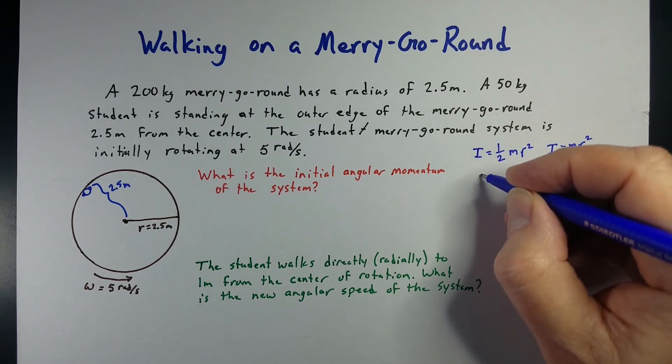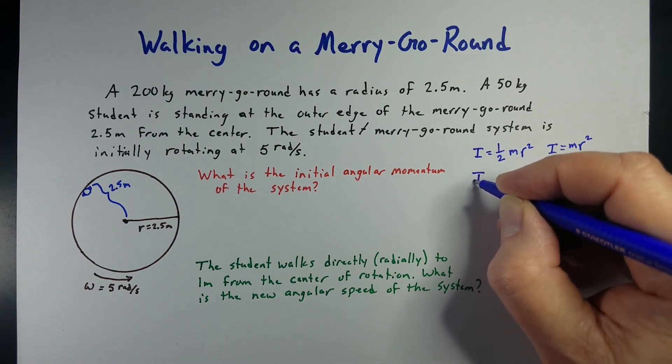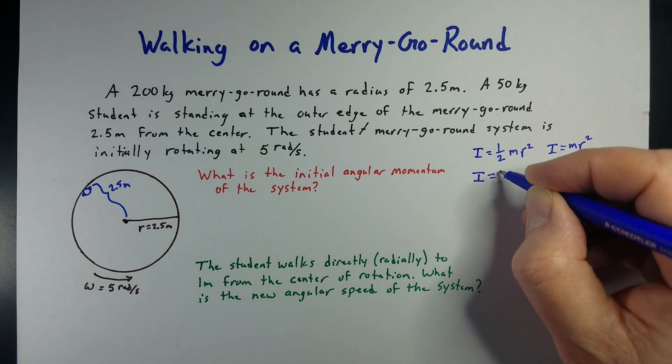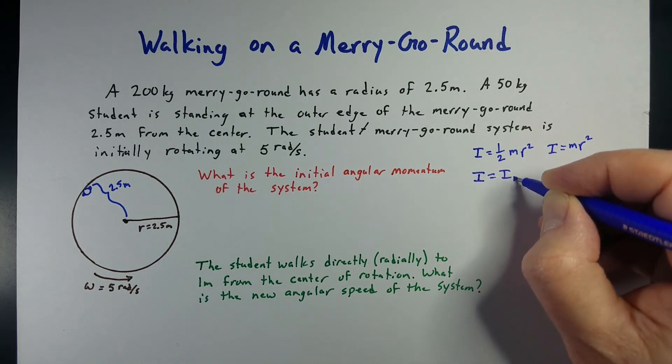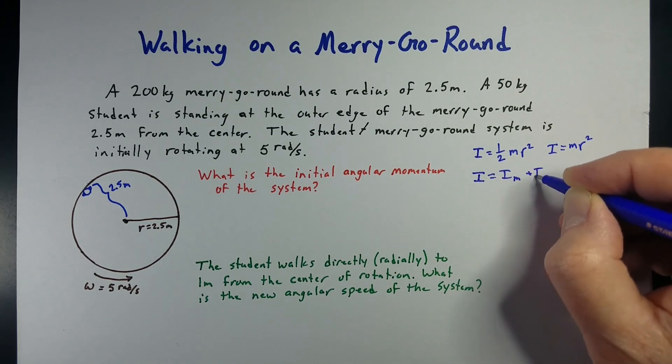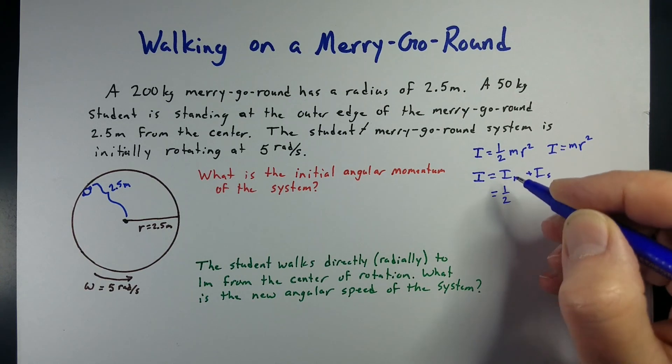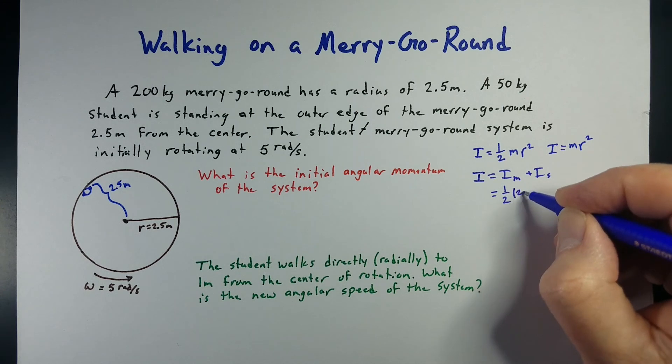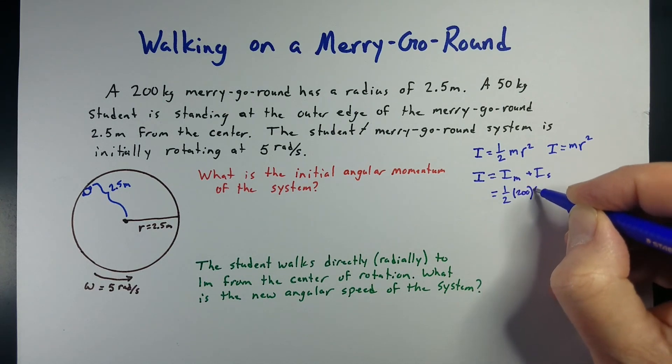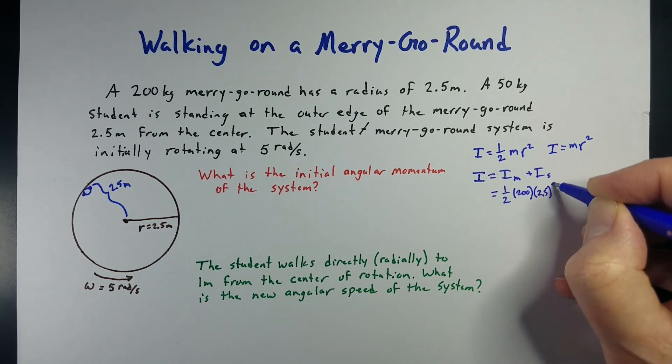So, let's go ahead and figure that out for this. The total moment of inertia is the moment of inertia of the merry-go-round plus the moment of inertia of the student. So, that's going to be one-half, the mass of the merry-go-round is 200, its radius is 2.5, and that's squared.